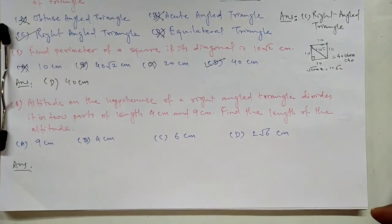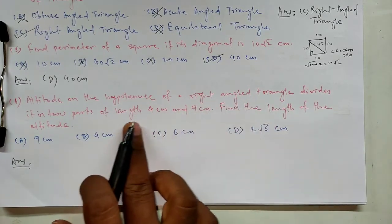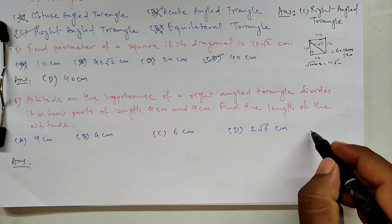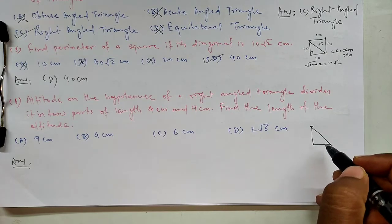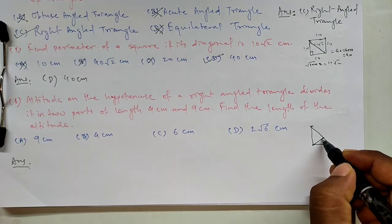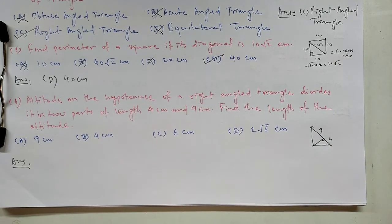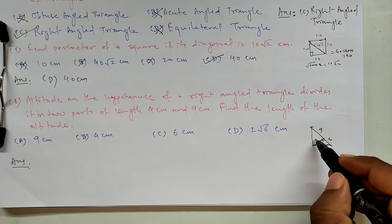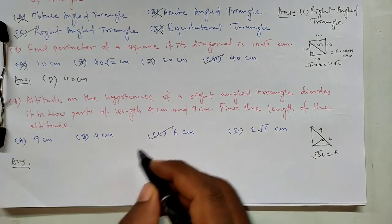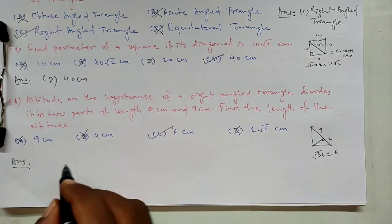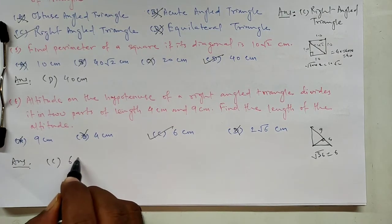Question number 6. Altitude on hypotenuse of a right angle triangle divides it in two parts, 4 and 9 cm. Then we apply the theorem of geometric mean. 4 into 9 is 36. Square root of 36 is 6. Option C is correct, 6 cm.